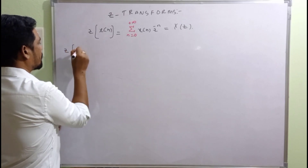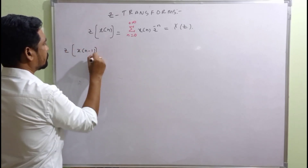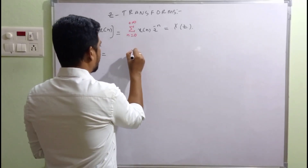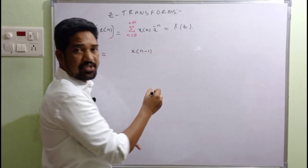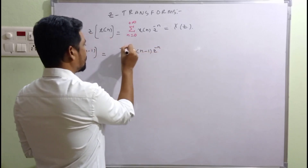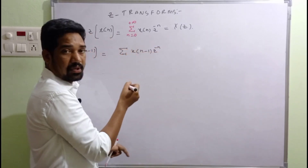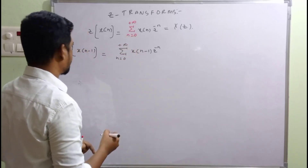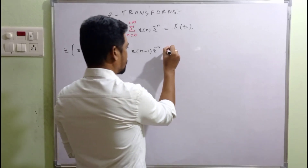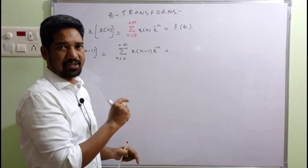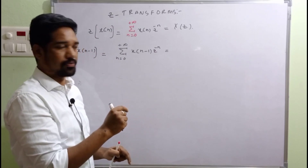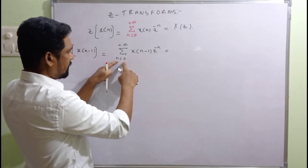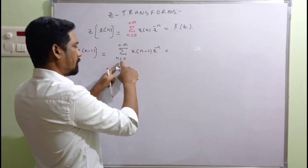Now, what will be the Z-transform of X(n-1)? The given function X(n-1) is multiplied with Z raised to minus n, and the summation runs from n equal to 0 to positive infinity. Watch carefully — beginners starting with Z-transform properties may miss this. For different values of n, we plug in n=0, n=1, n=2, and so on.